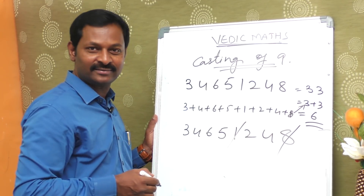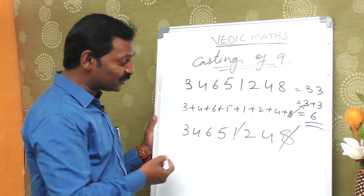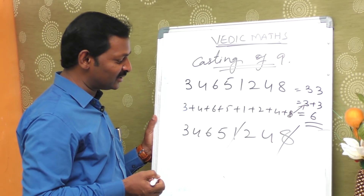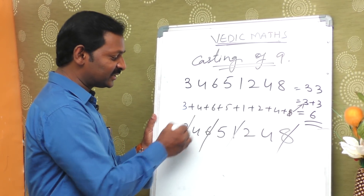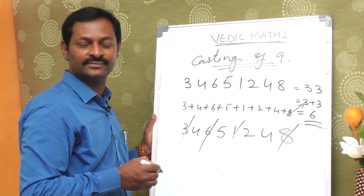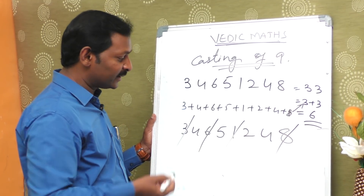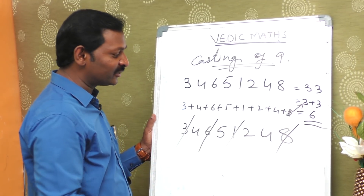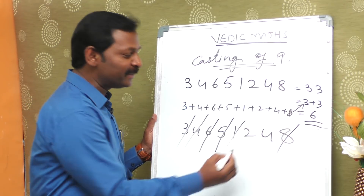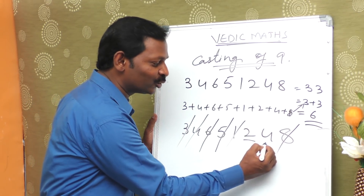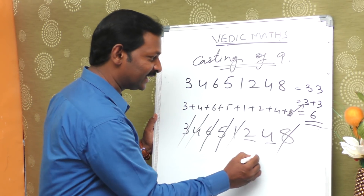8 and 1 make 9. 3 and 6 make 9. 4 and 5 make 9. Imagine 2 and 4: 2 plus 4 equals 6.